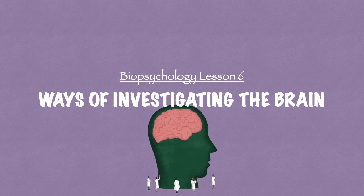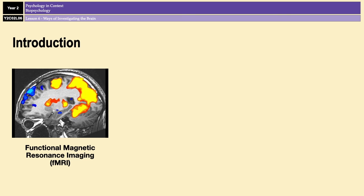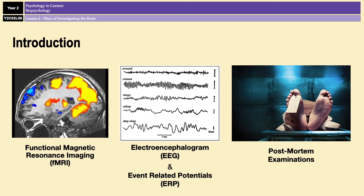Hello everyone and welcome to biopsychology lesson 6. In this video we're going to look at different ways of investigating the brain. For A-level psychology there are 4 ways that you need to know about: fMRIs, EEGs and ERPs, and finally post-mortems.